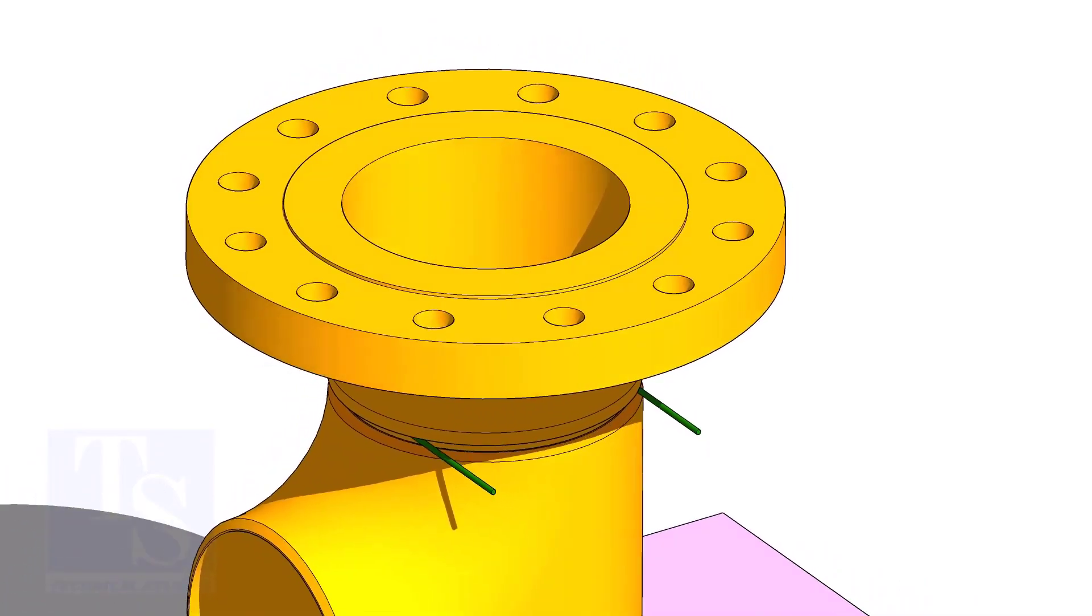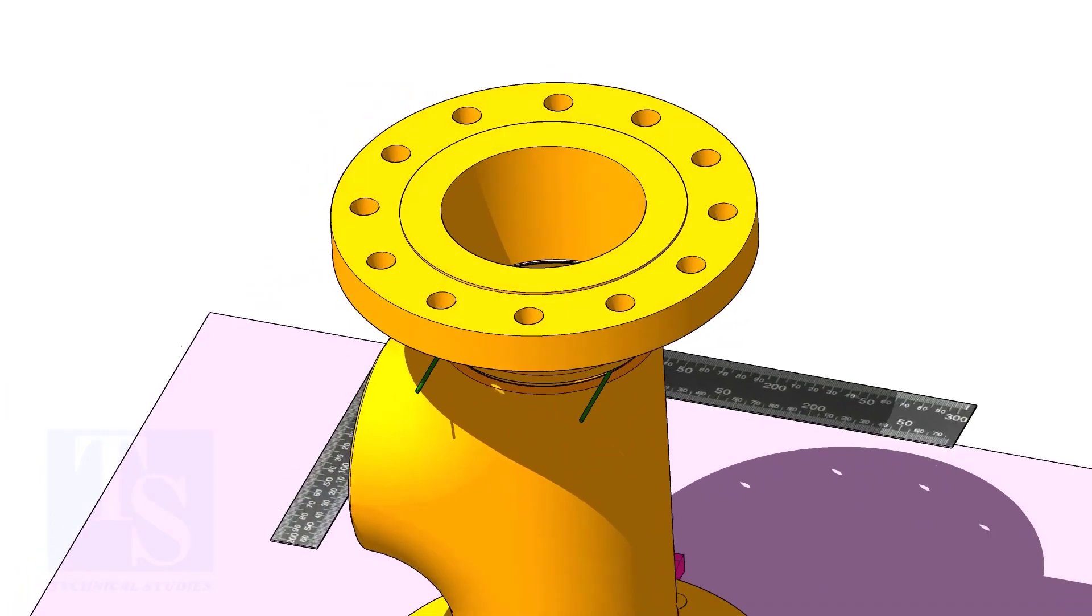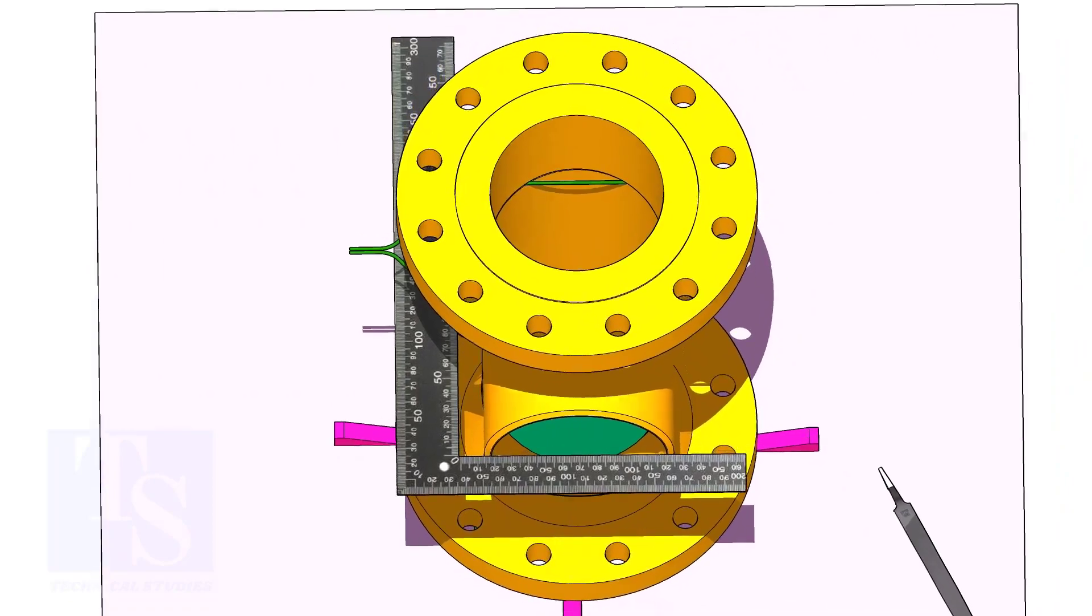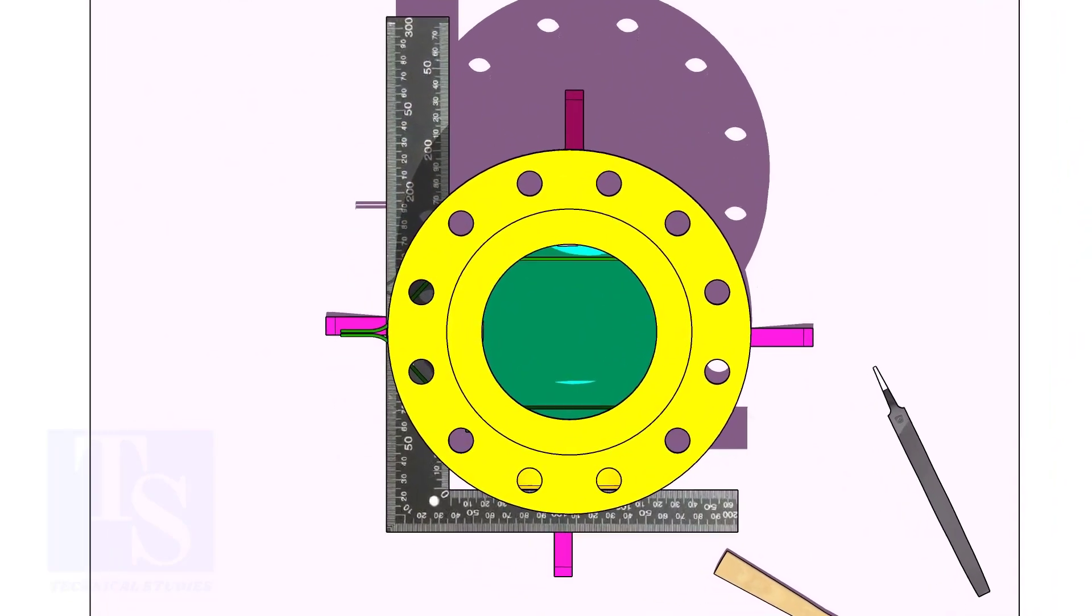Put the flange on the top side of the tee. Correct the hole center of the flange and the face of the tee as shown. Correct the overlap.